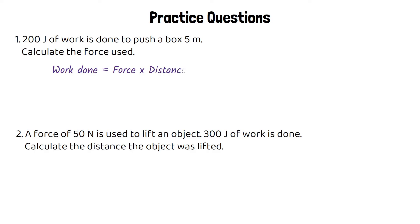For the first question, we write out the equation: work done equals force times distance. We know the work done is 200 and the distance is 5, but we don't know the force. So 200 equals force times 5, which means 200 divided by 5 will give us the force. 200 divided by 5 is 40, so a force of 40 newtons was used.